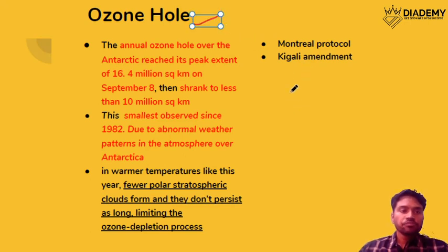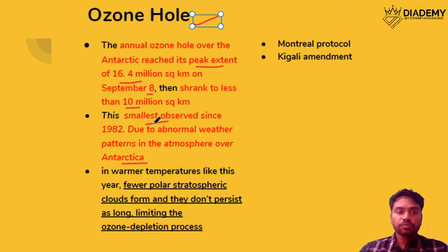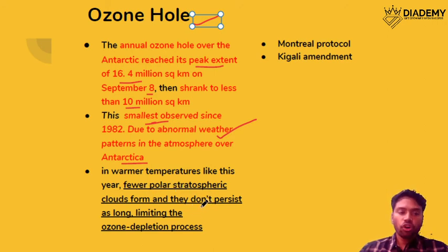The next topic is the ozone hole. Recently in the Antarctica region, the ozone hole spread to 16.4 million square kilometers on September 8th, then suddenly shrank to 10 million square kilometers — the smallest size observed since 1982. This sudden change is attributed to abnormal weather patterns in the atmosphere. In warmer temperatures, fewer polar stratospheric clouds (PSCs) form and they do not persist long, limiting the ozone depletion process. PSCs play a major role in the formation of the ozone hole.